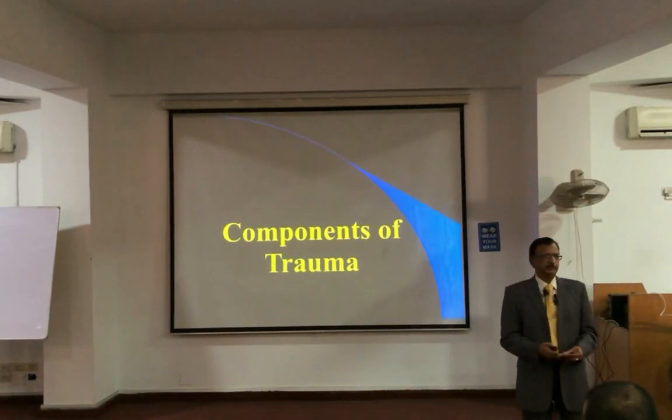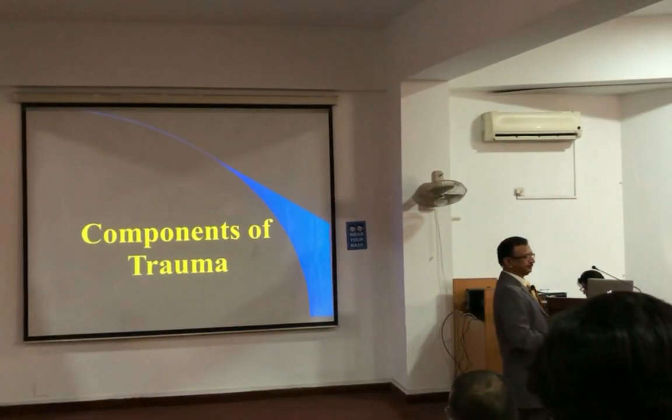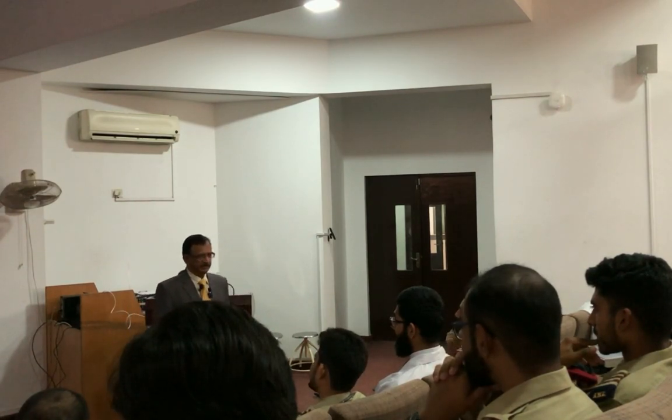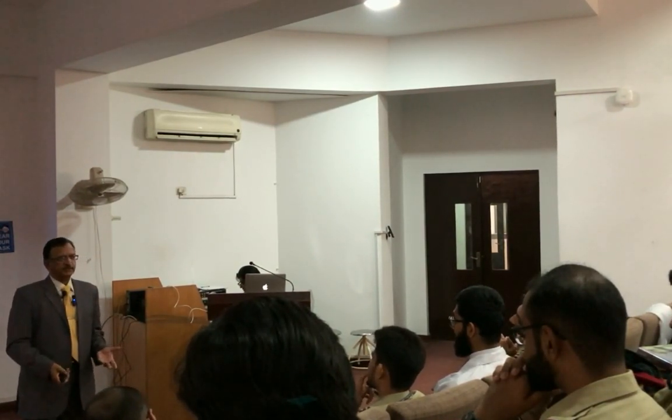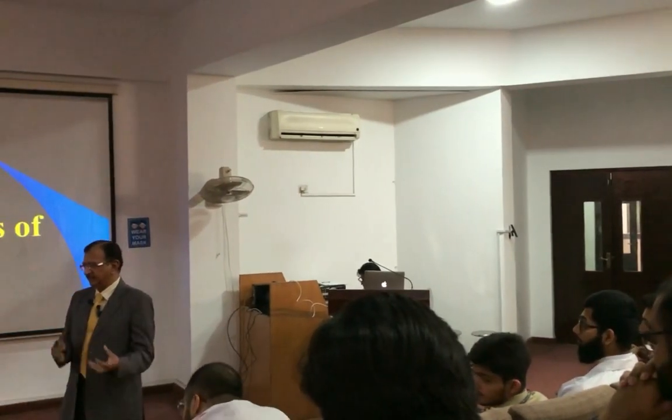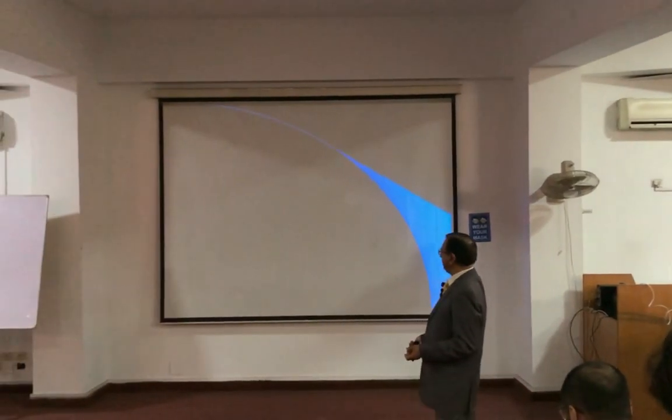What are the components of trauma? There is the weapon and the person to whom you are going to inflict injury — the trauma has not occurred yet. The components are: the object, the subject, and the movement. These three are the main components of trauma.